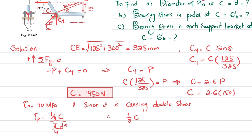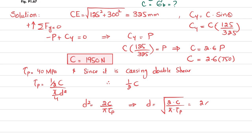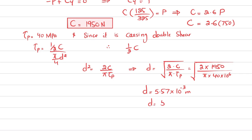Since d is unknown, rearranging gives d² equals 2C divided by (π times shear stress in pin). Therefore d equals √(2C / (π × τ)). Substituting: d equals √(2 × 1950 / (π × 40 × 10⁶)). Solving, the required diameter comes out to be 5.57 × 10⁻³ meters, or 5.57 millimeters.